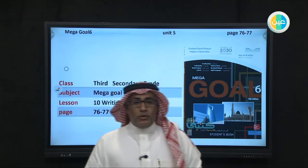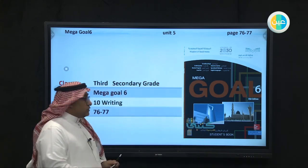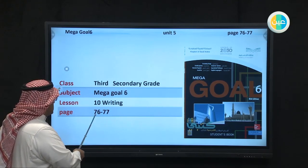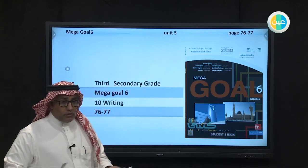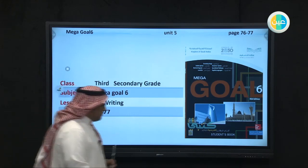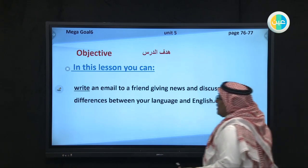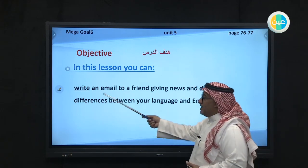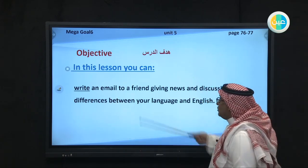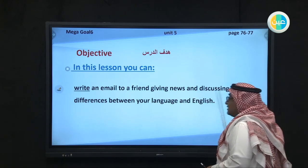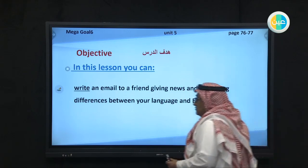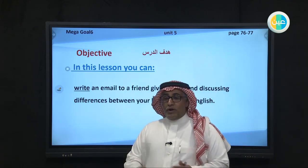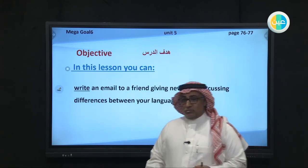Bismillah ar-rahman ar-rahim. Hello everyone, welcome to a new English class of Mega Goal 6 for third secondary grade. Today we have listening, writing on pages 76 and 77. Our objective today is one: we are going to write an email to a friend, giving the news and discussing differences between your language and English — comparing between English and our mother language, Arabic.